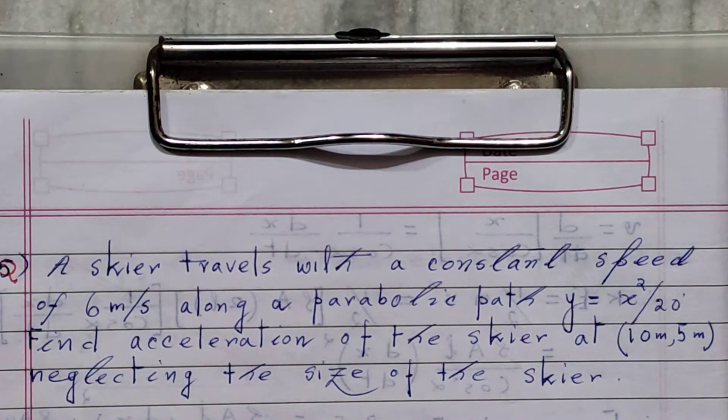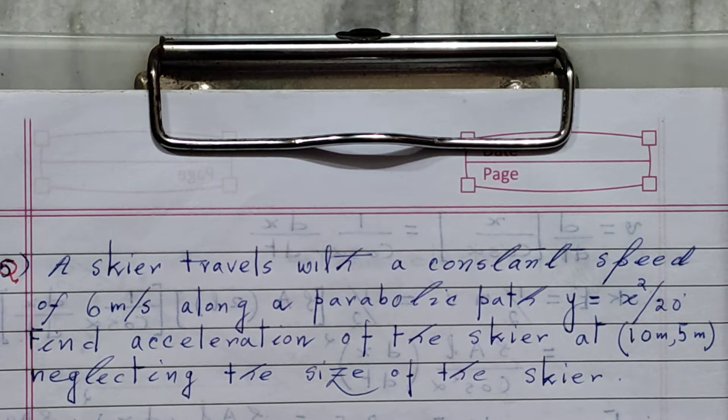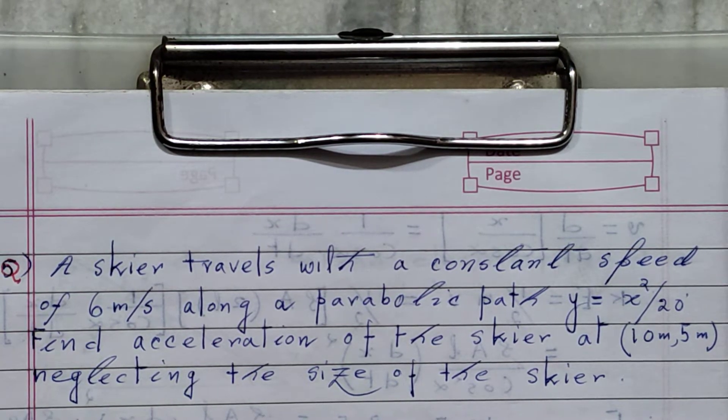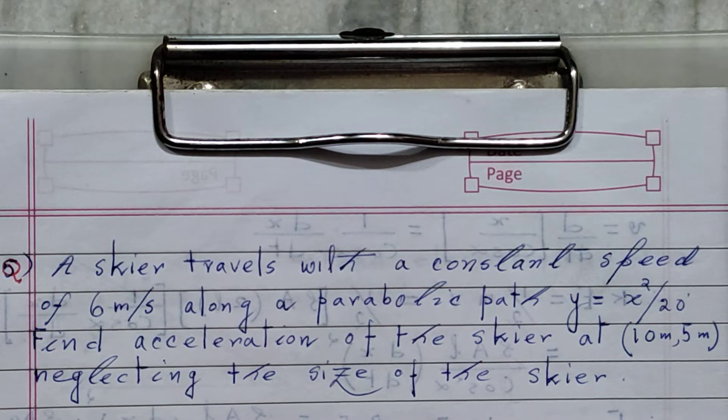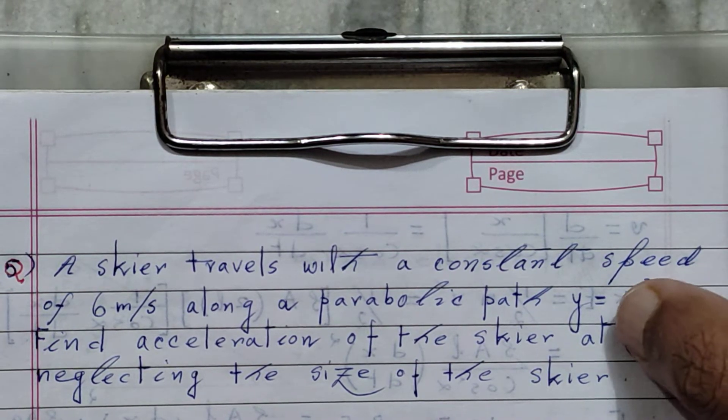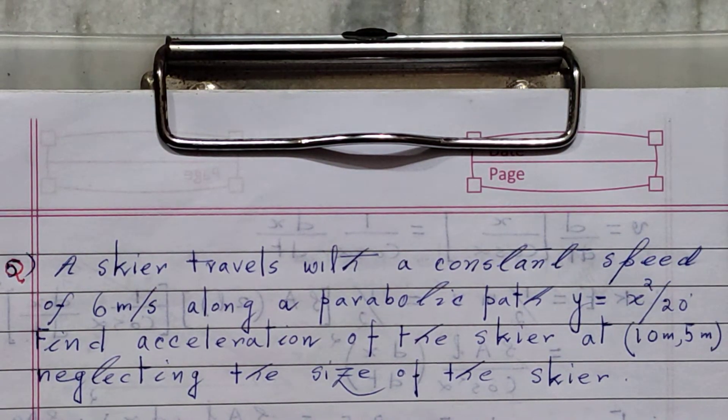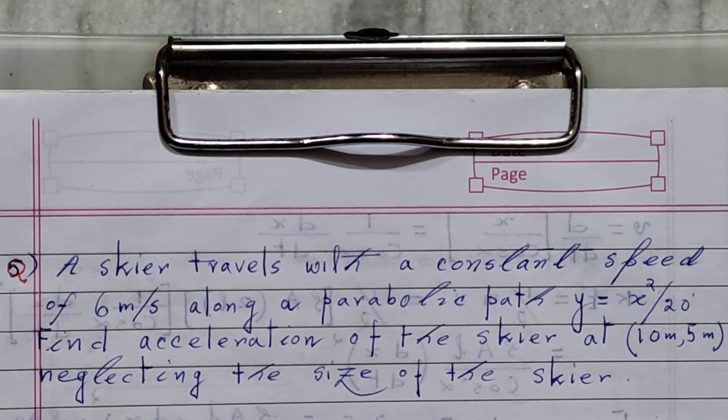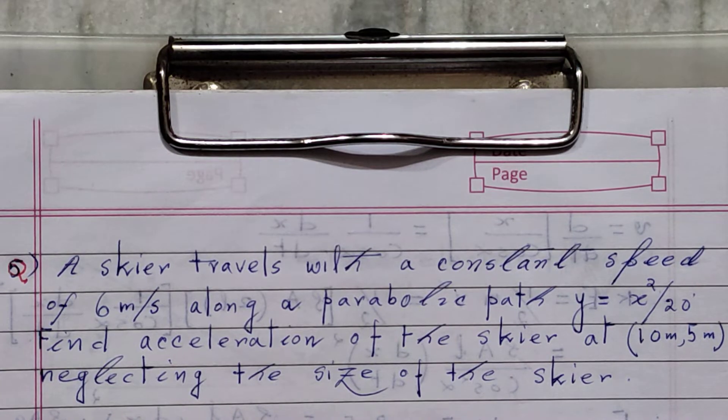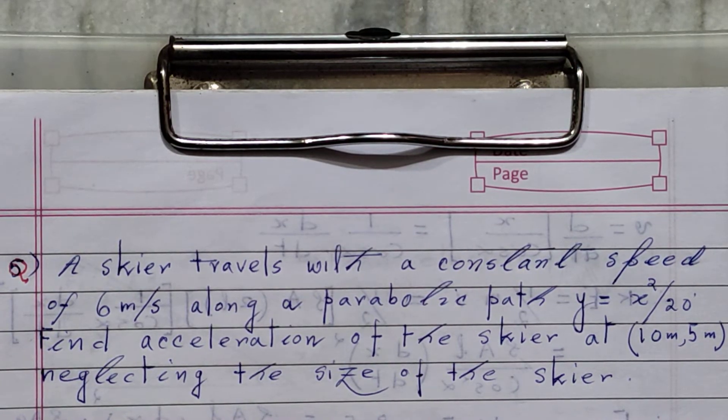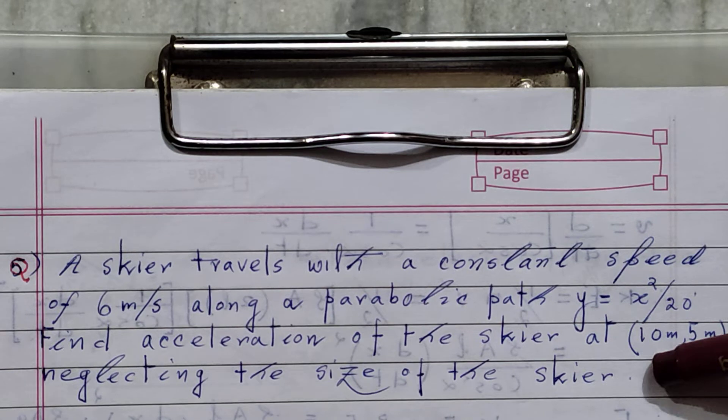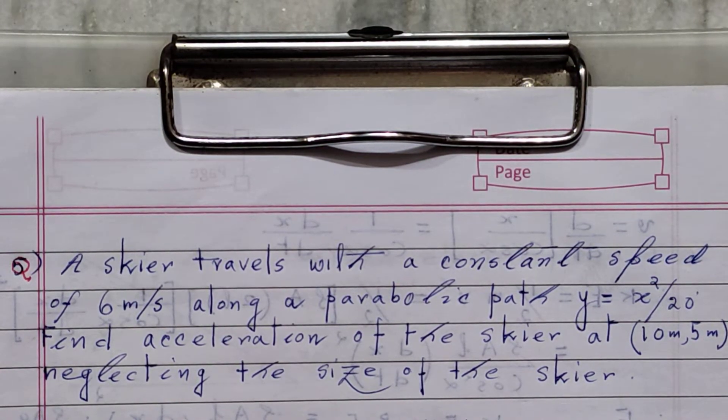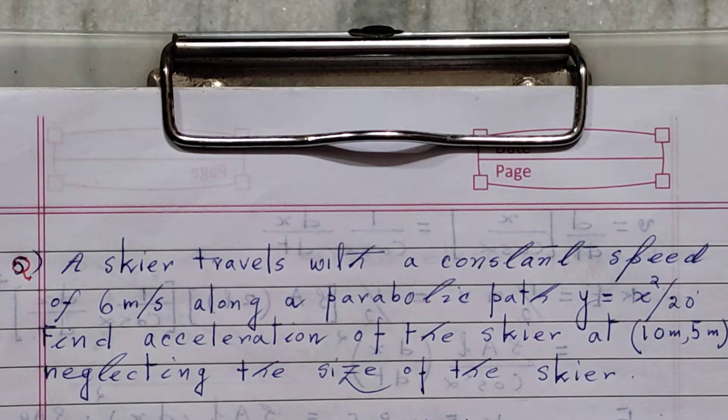So there is a skier who is skiing on a parabolic path, and that equation of parabola is y equals x squared by 20. Our goal is to find the acceleration of the skier while he is skiing on that parabolic path at the coordinate point 10 meter comma 5 meter. We can neglect the size of the skier. So let's proceed with the problem.